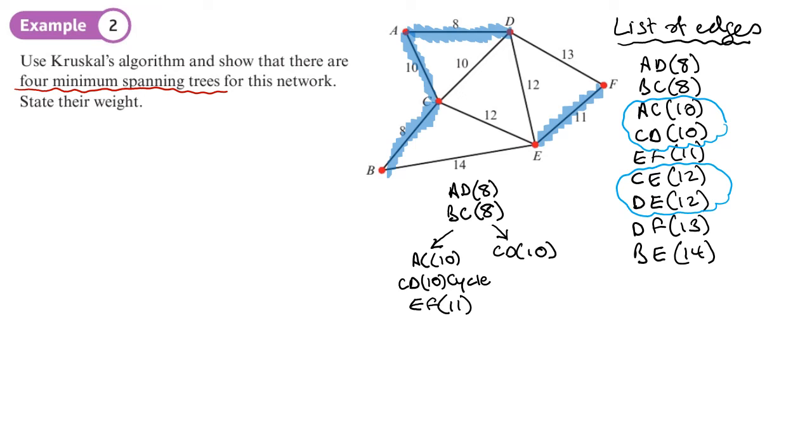Then we've got these choices here, either CE or DE. So I should write that down. So CE or DE. If I pick CE, then I'm going to have an edge here. No cycle, so I get a minimum spanning tree. What if instead I picked DE? Yes, I can do that. So I would also get a minimum spanning tree.